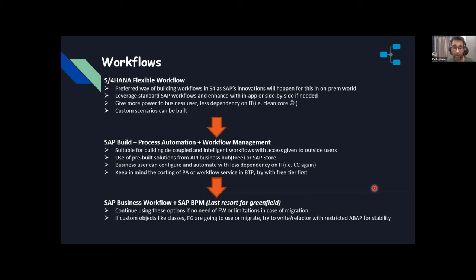Business users can configure and automate with less IT dependency — this is clean core. Keep in mind the costing of process automation or workflow service in BTP. Try with free tier first whenever you're developing anything in BTP. If the above two options are not sufficient, then choose SAP Business Workflow — SAP BPM — which has been there a long time. It will be a last resort for Greenfield, but it's not deprecated and can still be utilized.